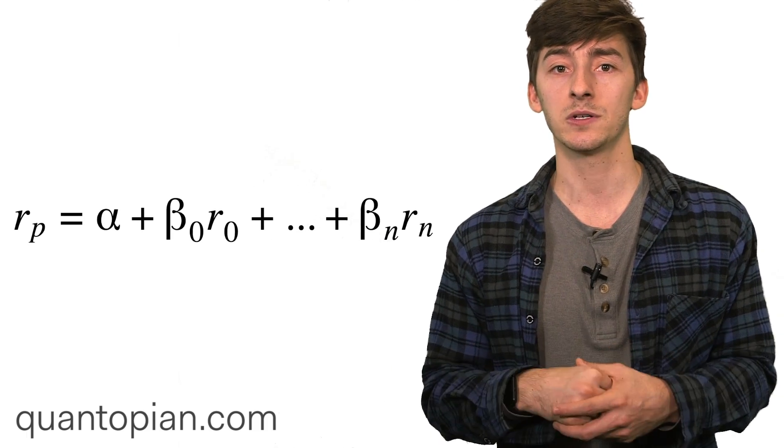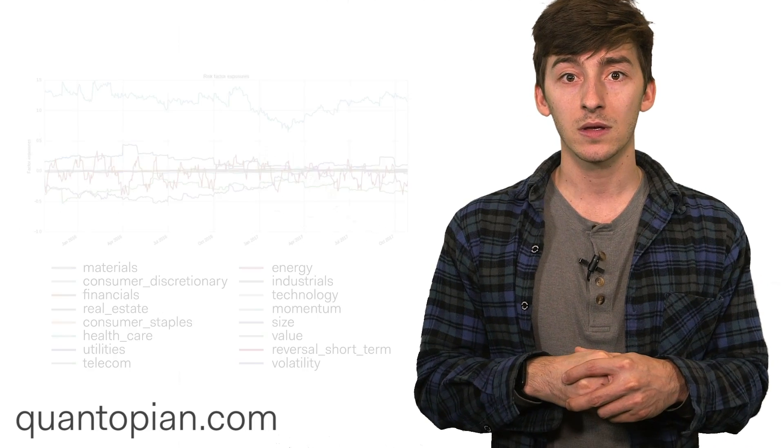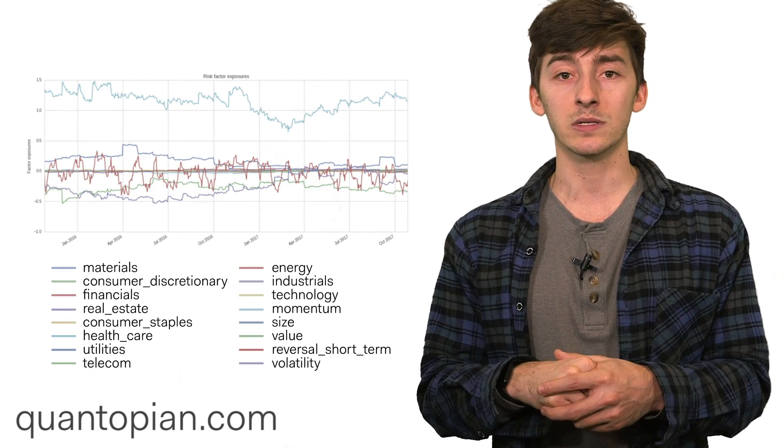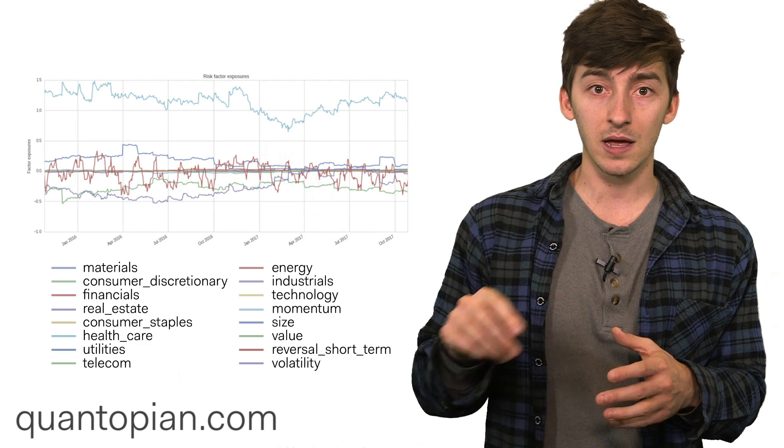Now we can extend this notion of adding in common risk factors to as many individual risk factors that we want. For instance, the Quantopian risk model is composed of 16 risk factors, 11 individual sectors and five styles.